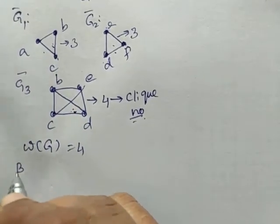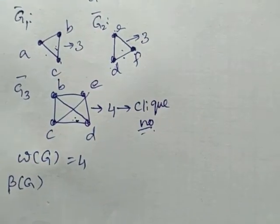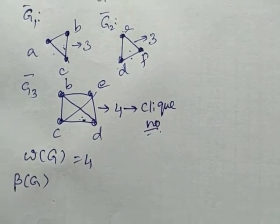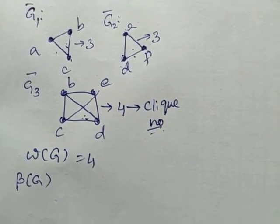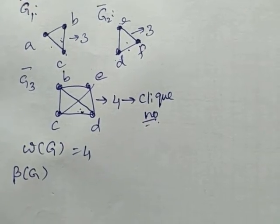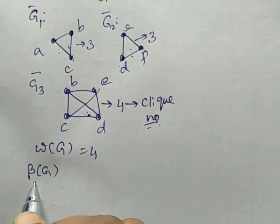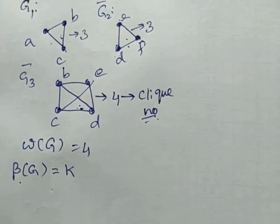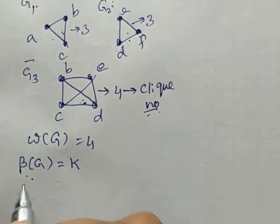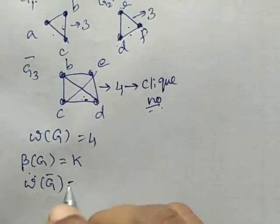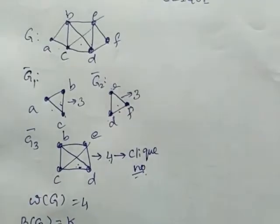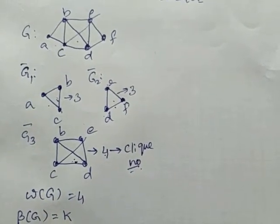Do you remember what β(G) is? β(G) is the number of vertices in a maximum independent set. An independent set is a set of vertices which are not adjacent to each other. The maximum number of such vertices is denoted by β(G). If the maximum number of non-adjacent vertices is K, then the clique number should also be K. In this graph the clique number is 4, meaning the maximum non-adjacent vertices should be 4.